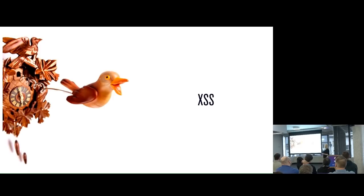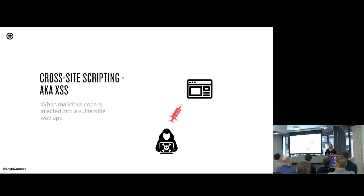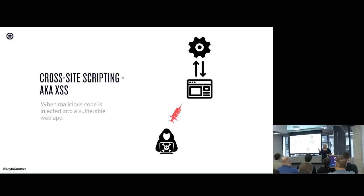Moving on to our next potential threat - XSS, or cross-site scripting. There are two types: stored, which we're going to talk about mostly, and reflected cross-site scripting, which is when someone clicks on a malicious link and that script tries to run. We're going to talk more specifically about stored because that's what goes into your web server. With reflected, you don't really have control over that - that's about educating your users not to click on dodgy links.